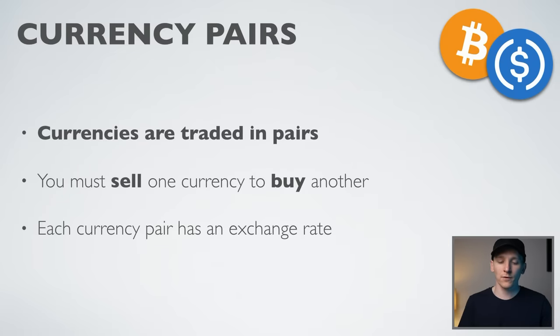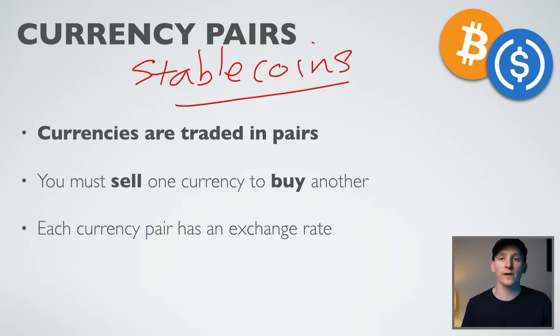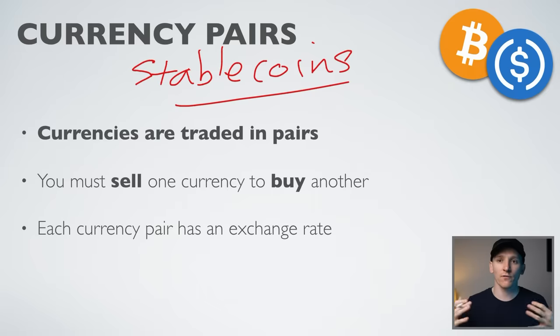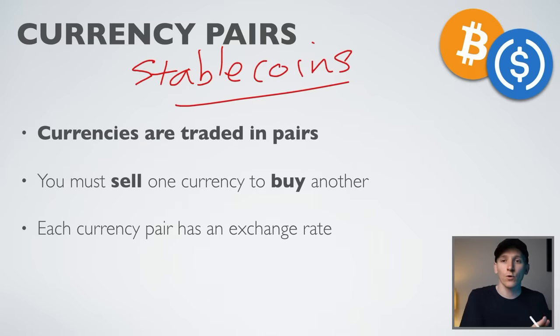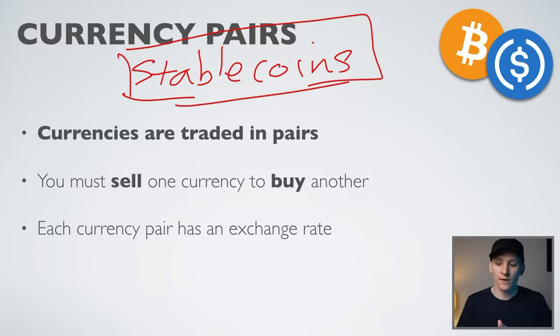When we trade cryptocurrencies, we trade them in a pair — you buy one and sell another; that's the only way trading works. Most cryptocurrencies are traded against stablecoins. Stablecoins provide liquidity in the market — when people trade a risk asset, they want to trade against a non-risk asset like US dollars. Since you can't use actual dollars directly, stablecoins fill that role. One stablecoin equals one dollar.